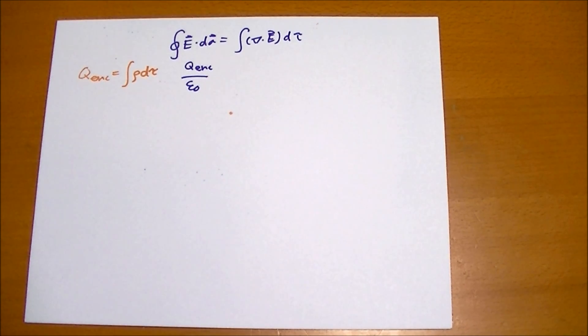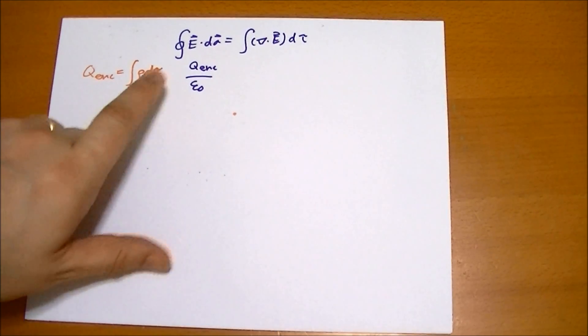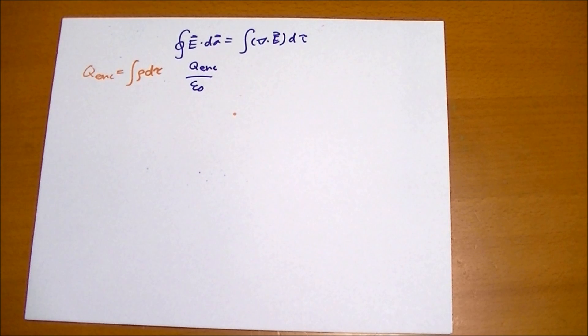And so that says that this value, integral rho d tau, must be equal to that value. Forgetting, of course, we need to add that epsilon naught.